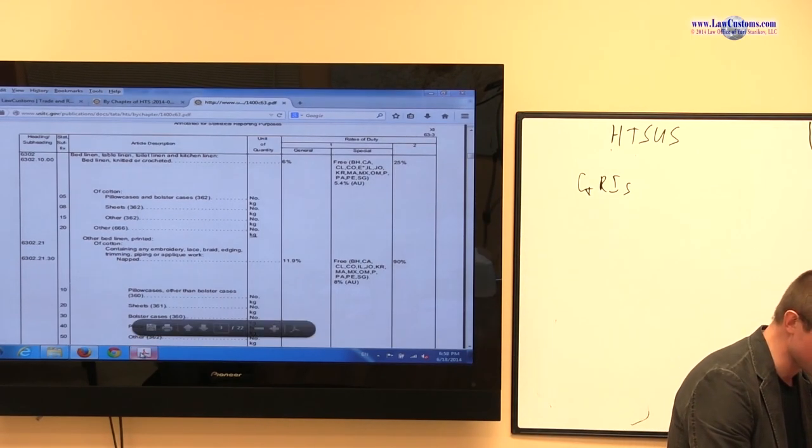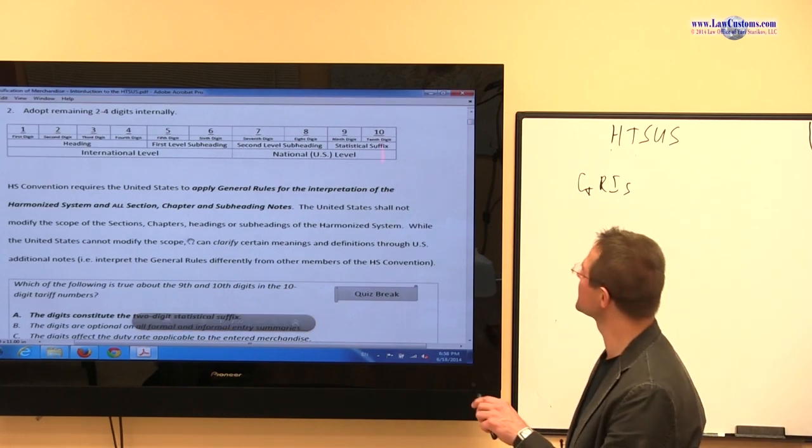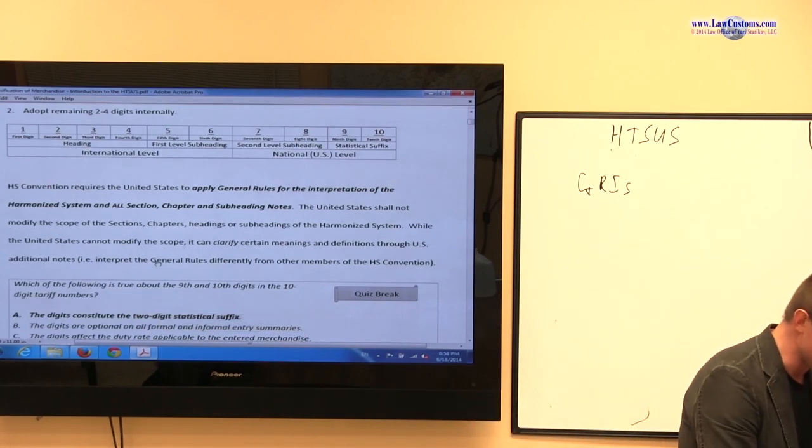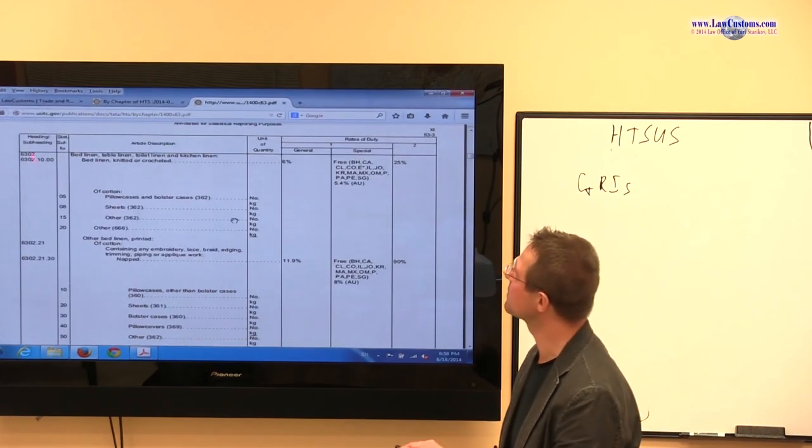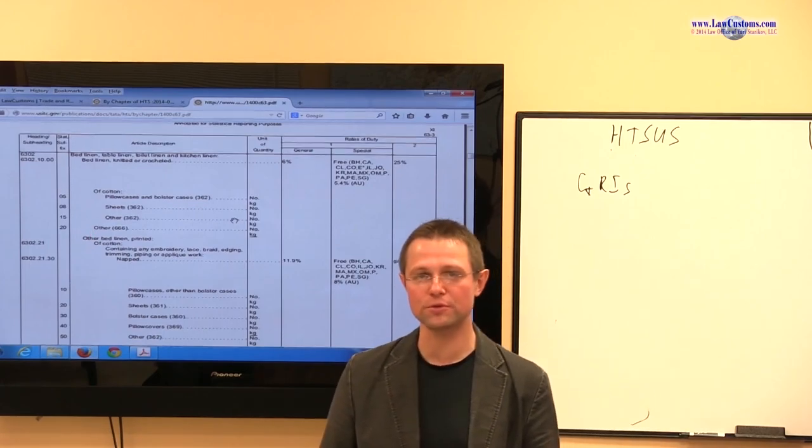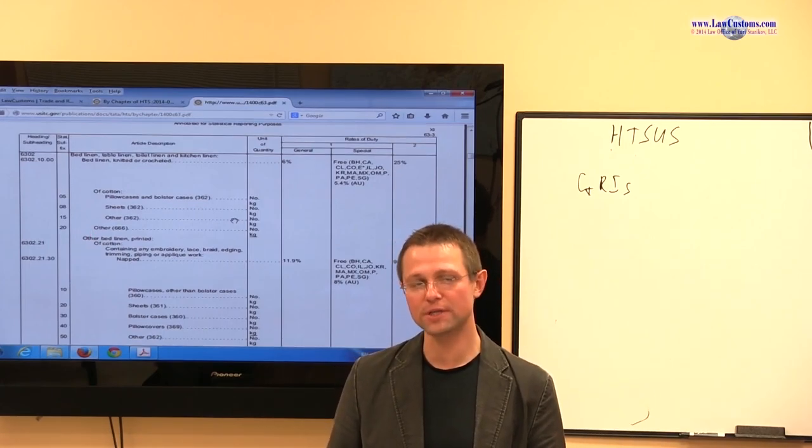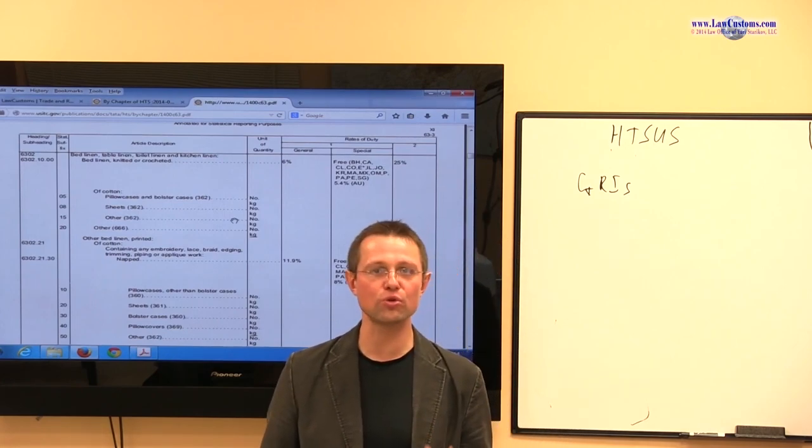So what about the other ones? What about the 9 and 10? 9 and 10 is really called a statistical suffix. And you can see that over here. Statistical suffix. And statistical suffix is really up to the United States to adopt. And the United States adopted primarily to distinguish certain classes of merchandise,